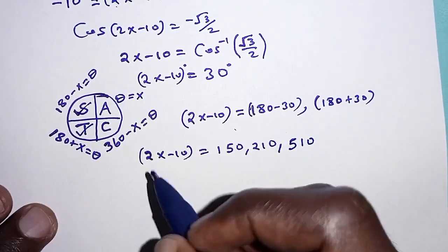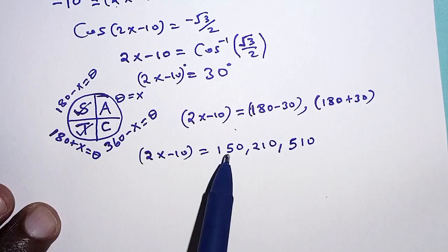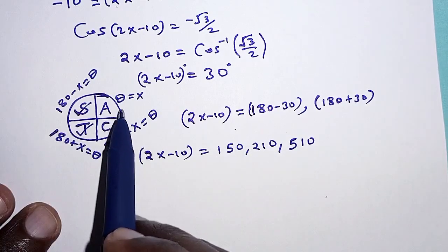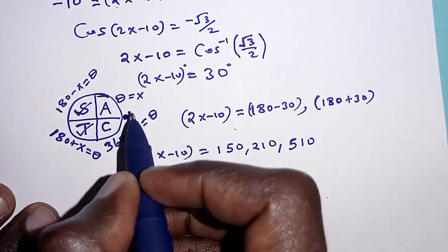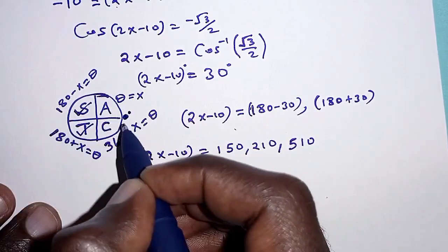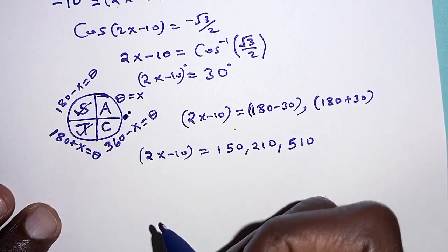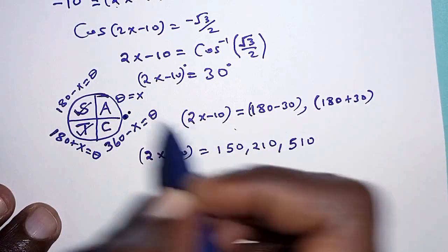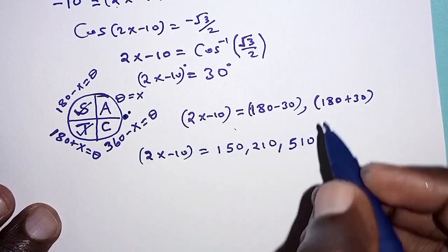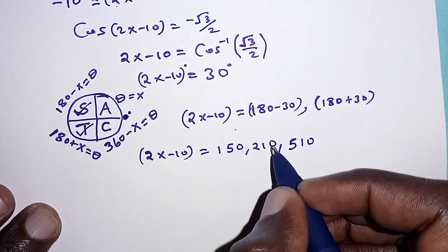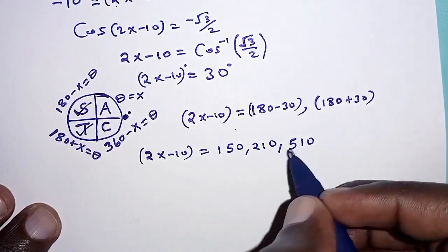Remember we are adding 360 because for these two values here, we obtain them in the first revolution. If you go all round from the starting point, here zero degrees, you go all round back to the same point, 360. And then the next values we obtain by going the second round. And in order to reflect that, we will add 360 to these values.